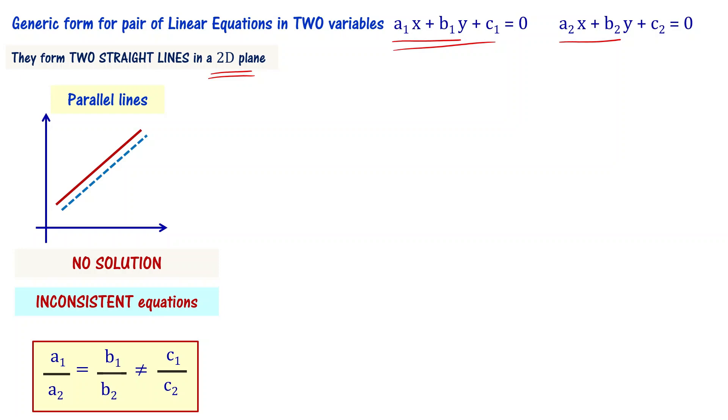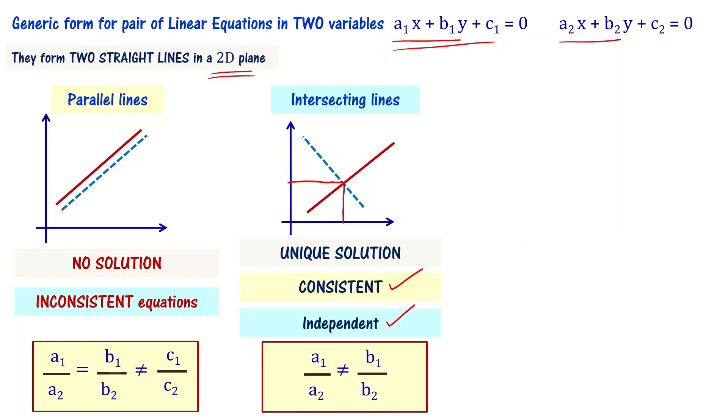Sometimes the lines can be intersecting. When you have intersecting lines, you have unique solution corresponding to this particular point. The equations are said to be consistent and they are independent set of linear equations. When you have consistent set, you have independent set also. The coefficients relate as a1 by a2 is not equal to b1 by b2.